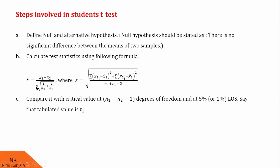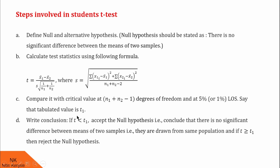Next, we compare this test statistic with the critical value at degrees of freedom (n1 plus n2 minus 2) and at level of significance 5% or 1%, whichever is mentioned in the question. We assume this tabulated value to be T1. In the next step, we write the conclusion by comparing these two values. If the calculated value is less than the tabulated value, then we accept the null hypothesis — that is, there is no significant difference between the means of two samples. And if the calculated value is greater than the tabulated value, then the null hypothesis is rejected — meaning there is a significant difference between the means of two populations.